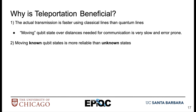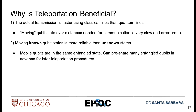Second, moving known states is a lot more reliable than unknown states. This allows us to move qubits that are in the same entangled state so that we can pre-share many qubits in advance for later teleportation procedures. Then whenever you want to transmit that unknown qubit state, you can do so very quickly with the help of that classical communication channel.